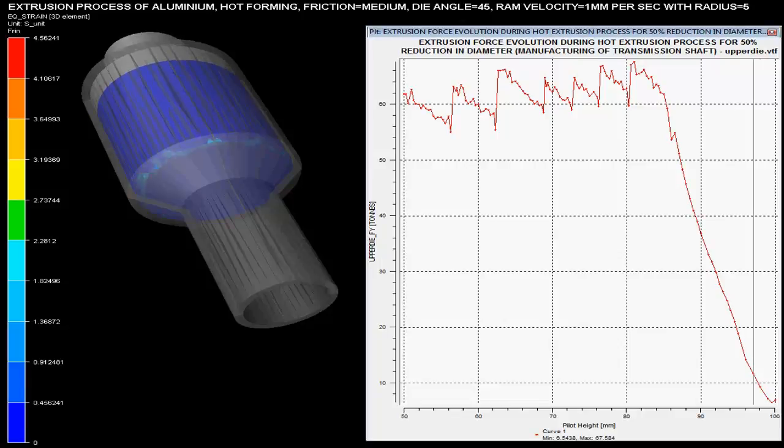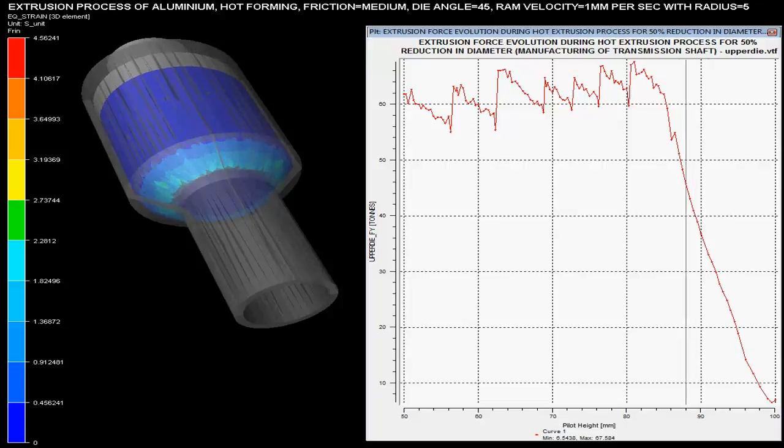This video shows the extrusion process of an aluminum solid shaft with 50% reduction in the diameter of the billet.